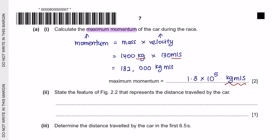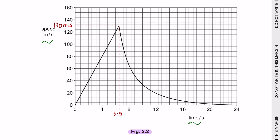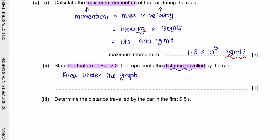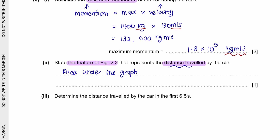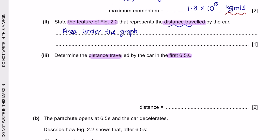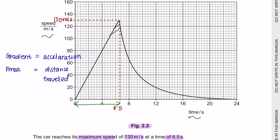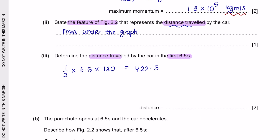Please do not forget your units in the final answer. Part 2: the feature of figure 2.2 that represents distance travelled is the area under the graph — the gradient represents acceleration and the area represents distance. Part 3: determine the distance travelled in the first 6.5 seconds. This region is a triangle, so we use half × base × height = 0.5 × 6.5 × 130 = 422.5 m, which is 420 m to 2 significant figures.